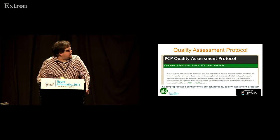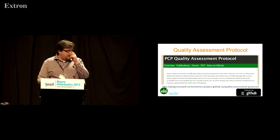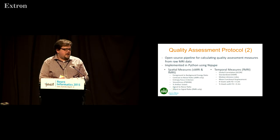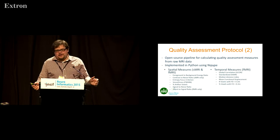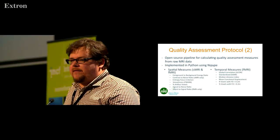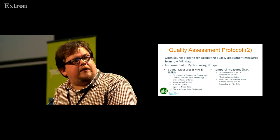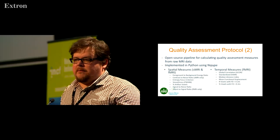My colleagues and I have been working on a quality assessment protocol. Essentially what we've done is try to come up with a list of all the different measures that have been proposed in the literature, take the ones that seem most reasonable, develop a software pipeline, and make it freely available for people to apply these measures in their own analyses. We've broken them up into spatial and temporal measures, and many of these measures overlap quite a bit — for example, signal-to-noise ratio is very similar to foreground-to-background energy ratio.